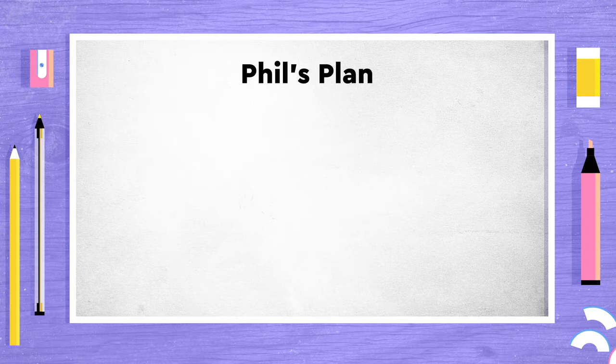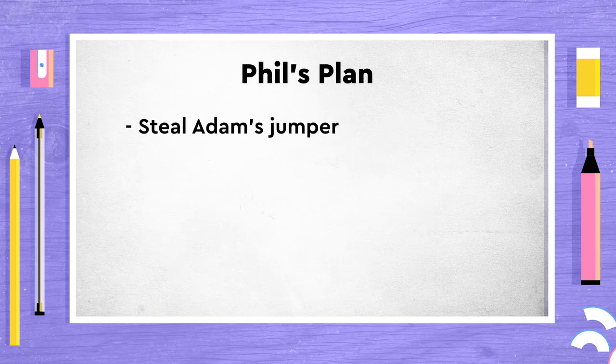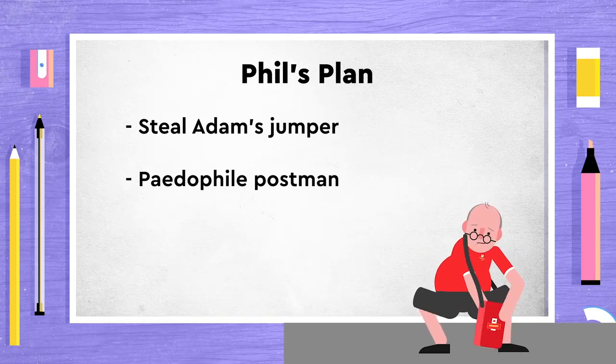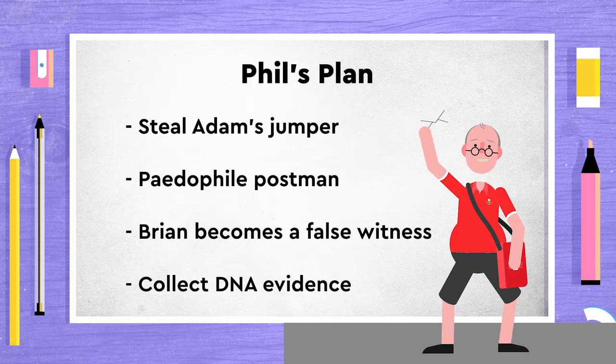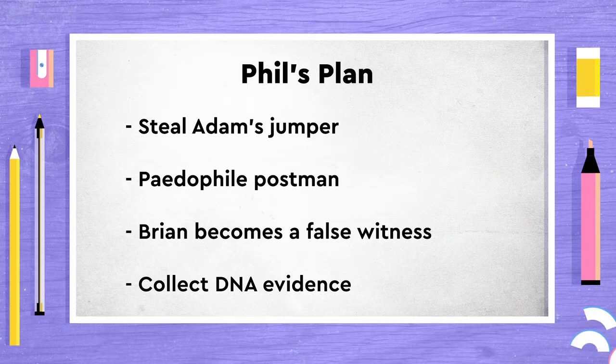As John Tate finds leadership stressful, he appeals to Phil. Phil finally speaks and comes up with a Machiavellian plan to cover the gang's tracks, involving burglary and stealing Adam's jumper, the invention of a paedophile postman, forcing Brian to be a false witness, and collecting a random stranger's DNA to serve as a decoy. Phil's cover-up plan hinges on recent innovations in forensic science and research into DNA, which allowed biological samples or fingerprints to be used in criminal investigations as reliable evidence.